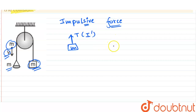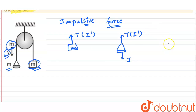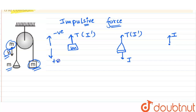For the pan, the FBD will show a tension which is again an impulsive force, and there will be an impulsive force I due to the particle. For the FBD of the particle, there will be an impulsive force in the upward direction. Taking upward direction to be negative and downward direction to be positive.